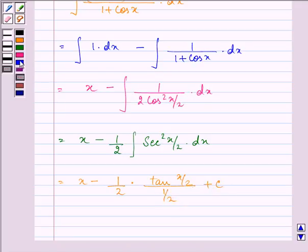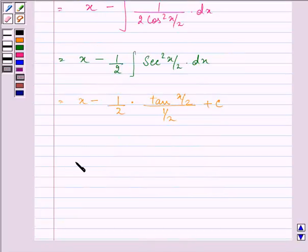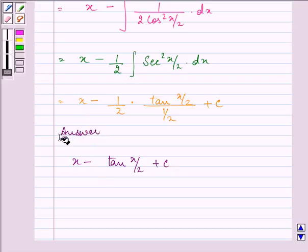So we have the answer as x minus, here 1 by 2 will get cancelled, we are left with tan x by 2 plus c. This is the required answer to the question.